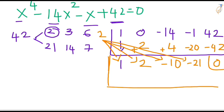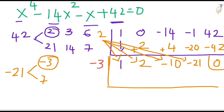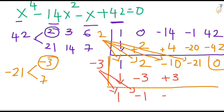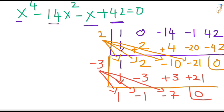Now do synthetic division again on the resulting row, with constant minus 21. The factors of minus 21 are minus 3 times 7. Take minus 3. Bring down the 1, multiply diagonally: minus 3 times 1 is minus 3. Continue: 2 minus 3 gives minus 1, then minus 3 times minus 1 is plus 3, and minus 10 plus 3 gives minus 7. Final remainder is 0, so minus 3 is a root.